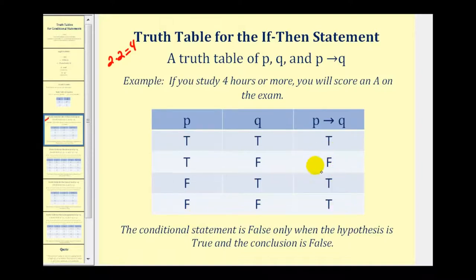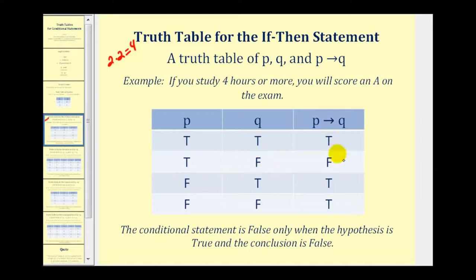Notice there is only one false in this column, and that's important to recognize. The conditional statement if p then q is only false when the hypothesis is true and the conclusion is false. Everything else is true. If we can remember that, it makes these tables a lot easier to complete.